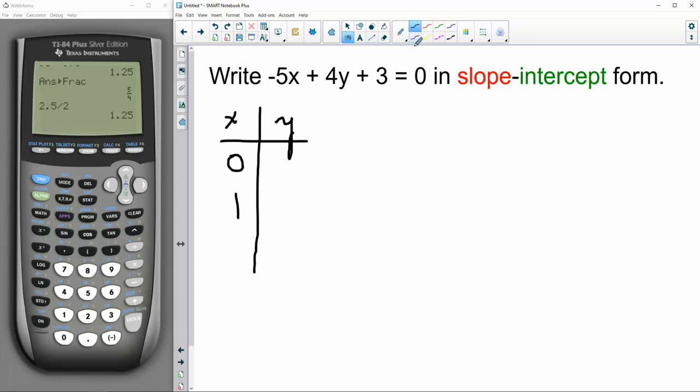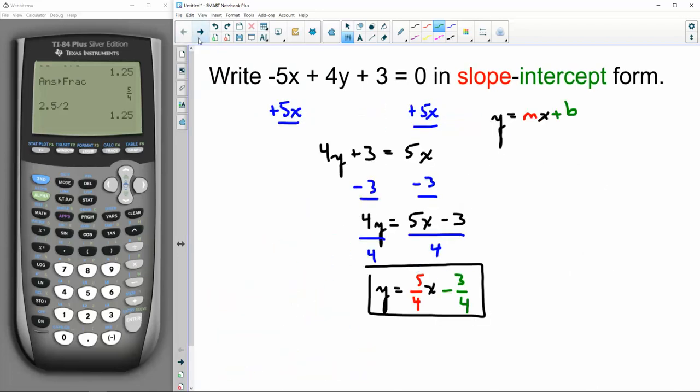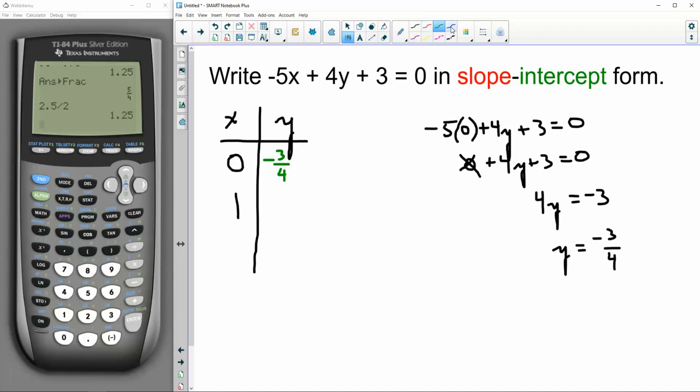Negative 5 times x plus 4y plus 3 equals 0. All right, negative 5 times 0 is 0. Okay, so I don't even know why I wrote it, just get rid of it. Subtract 3 from both sides, and then divide both sides by 4. There, I got this y value. When x is 0, y is negative 3/4. What's familiar, guys? Negative 3/4, negative 3/4.